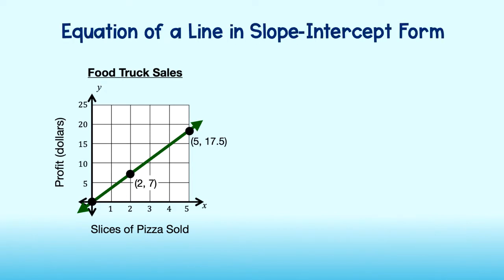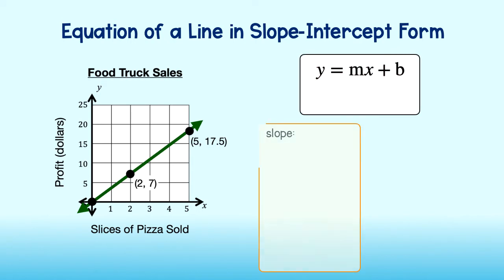We can write an equation on this line in slope intercept form, that is, y equals mx plus b, by first finding the slope or the steepness of the graph. Remember, the formula for slope m is y2 minus y1 over x2 minus x1. We can use two points shown on the graph, plug them into our equation and solve for m to see that the slope is 3.5.